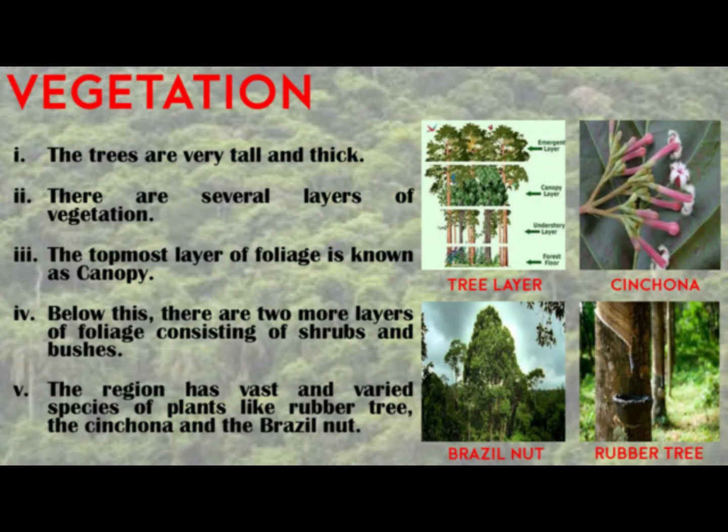This area is known for its rainforest. The trees here are very tall and thick. There are several layers of vegetation. The topmost layer of the foliage is known as canopy. Below this, there are two more layers of foliage consisting of shrubs and bushes. The forests are so dense here that sunlight hardly reaches the ground. It is home to a variety of plant species like rubber tree, chinchona, brazil nut, etc.